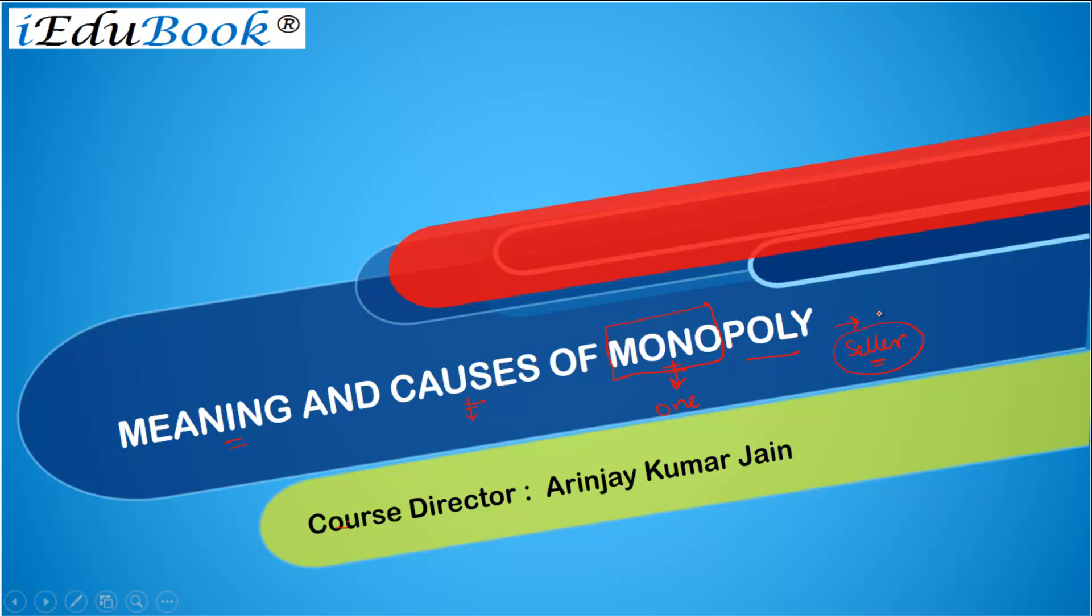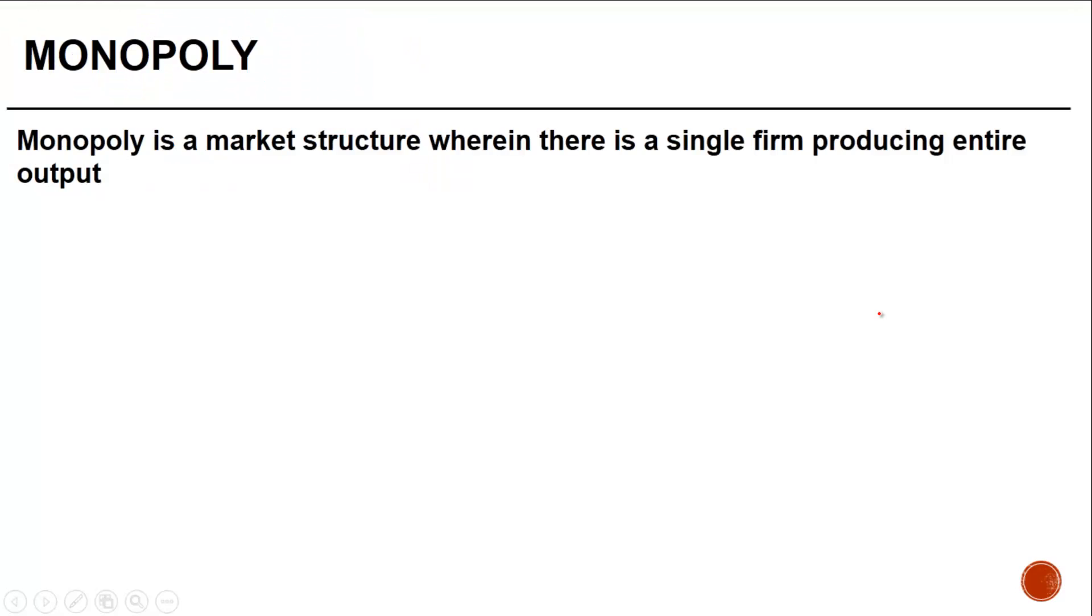Monopoly is a market structure wherein there is a single firm producing entire output. Whatever is required in respect of that particular product, it is done by a single firm.